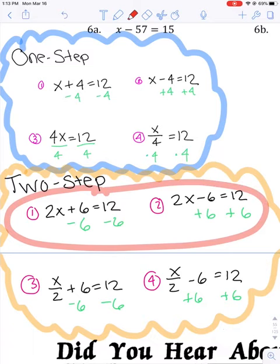If you look at the first row, those equations are very similar, 2x plus 6 and 2x minus 6, and they both equal 12. In both cases, we have to get rid of the 6 first.